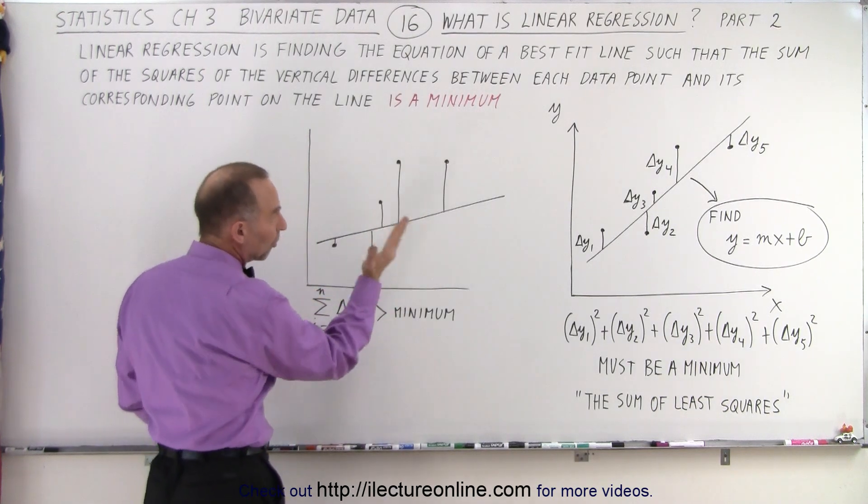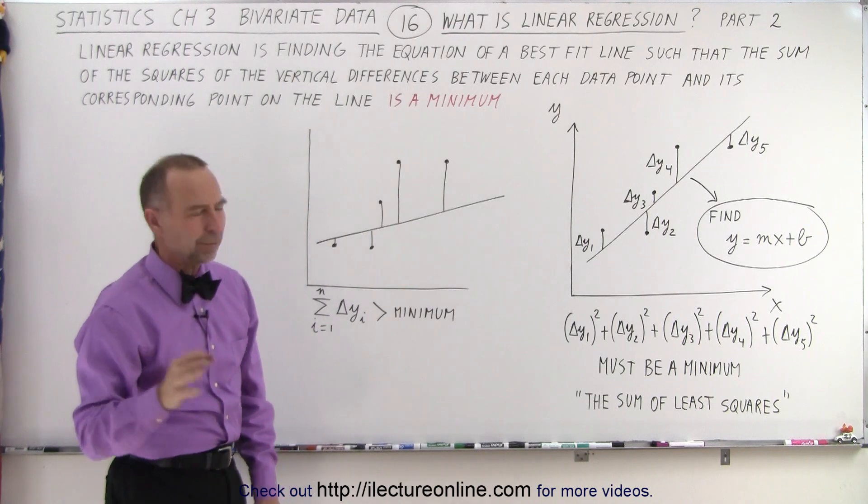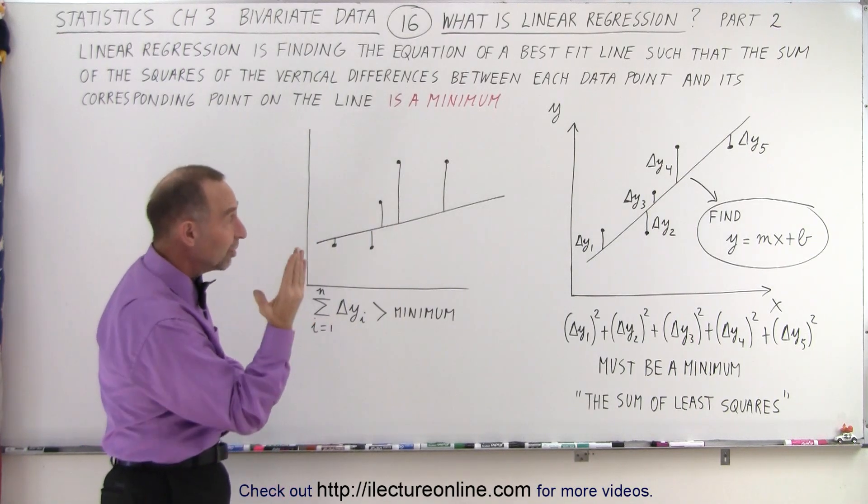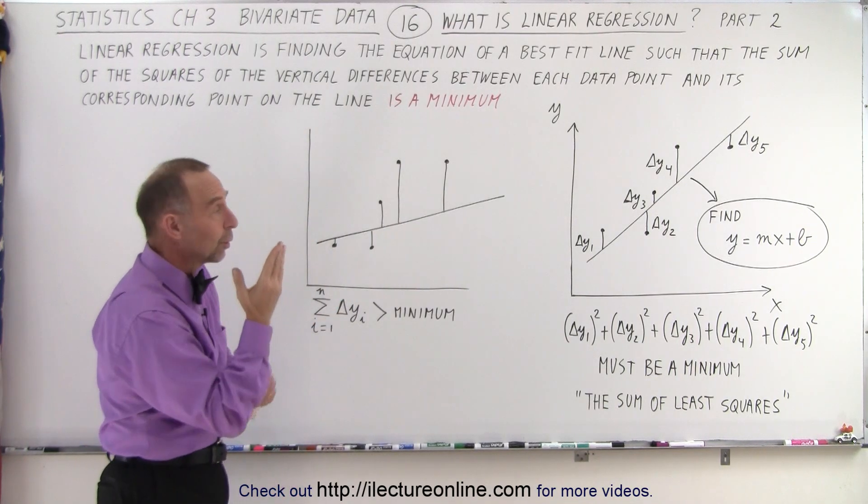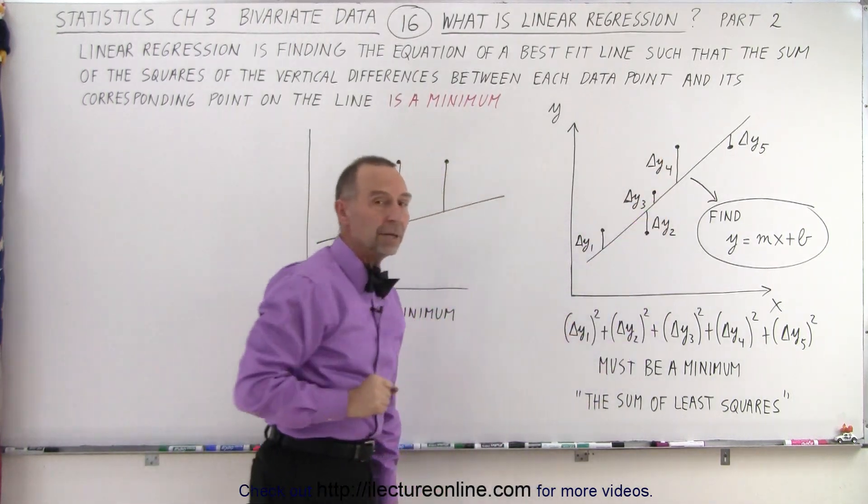So we have to change the slope of the line, and do it over and over and over again. Well, that would be kind of a hard method, but if we did that, eventually we'd find the exact point where the line would be such that the sum of the squares of these differences are indeed a minimum.